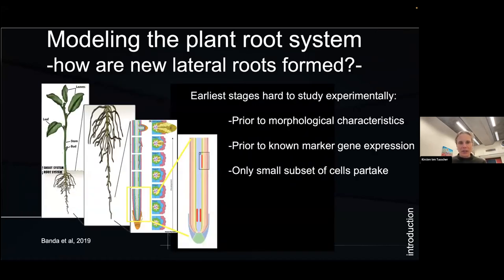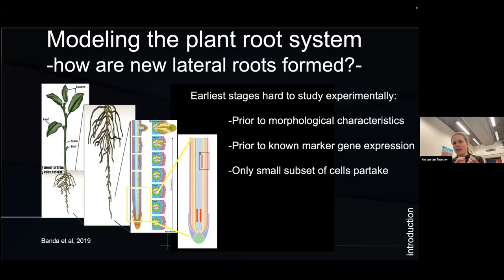In my group we are very interested in understanding the development of the plant root system, particularly using multi-scale modeling to contribute to that understanding. Plant root systems are typically branched, and these branchings arise from so-called lateral roots. These lateral roots don't emerge on the outside of the plant but rather arise from the inside, originating from a tissue overlaying the vasculature. The earliest sign is an asymmetric division, then periclinal divisions form a dome that must push through overlaying tissues to emerge into the soil.